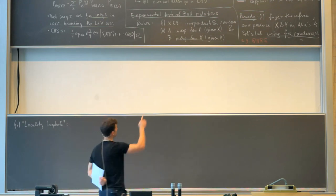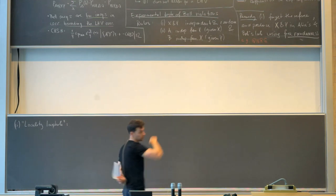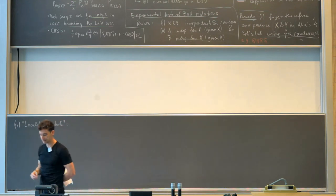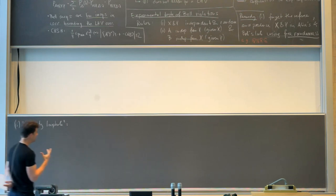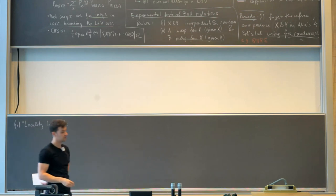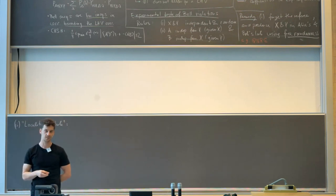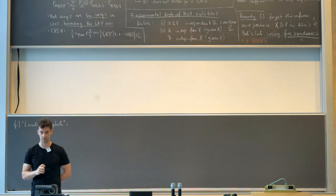Why am I writing 'given x' and 'given y' in these conditions? I do not want to say that a is independent from y — I want to say that a, together with x already given, is independent from y. Mathematically, this is a different statement. What I'm writing down is essentially the so-called no-signaling condition on probability distributions, which we'll discuss in more detail on Wednesday.